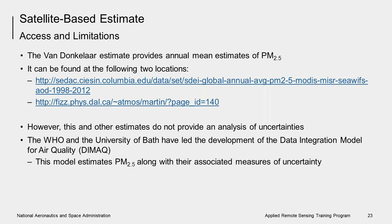Though the Von Donkelaar and other methods provide multi-year global PM2.5 estimates, they do not provide an analysis of the uncertainties associated with these estimates. Seeking a standardized method, the WHO and the University of Bath have developed a method to calculate both PM2.5 estimates along with their associated measures of uncertainty.